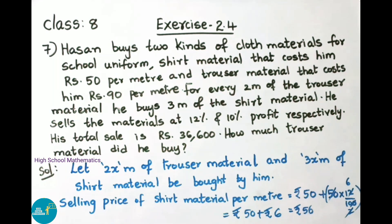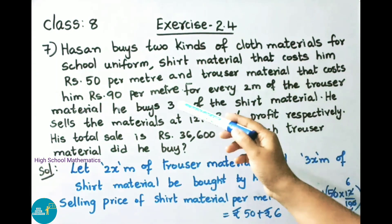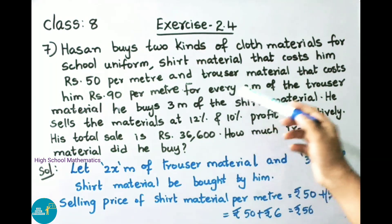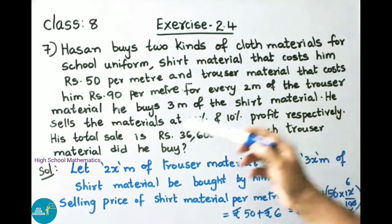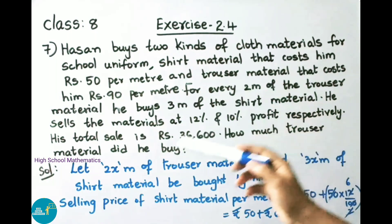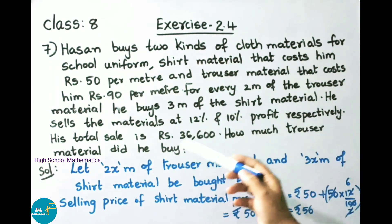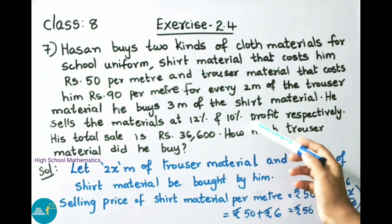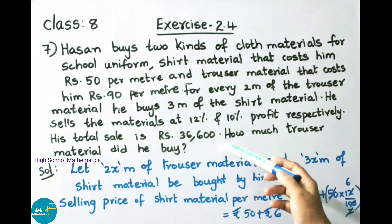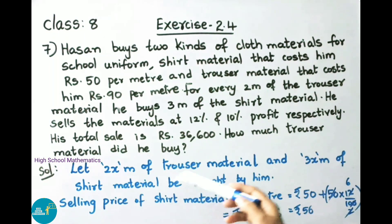Question number 7: Hassan buys two kinds of cloth materials for school uniforms — shirt material that costs him 50 rupees per meter and trouser material that costs him 90 rupees per meter. For every two meters of the trouser material, he buys three meters of the shirt material. He sells the materials at 12 percent and 10 percent profit respectively. His total sale is 36,600 rupees. How much trouser material did he buy?